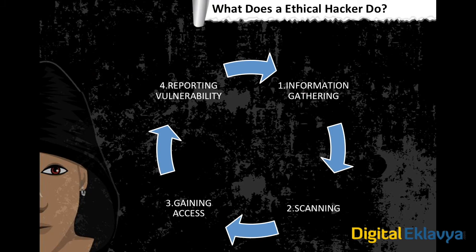What does an ethical hacker do? First, we gather information about the target — suppose the target is yourcollege.com. We gather information from various sources on the internet using tools, write everything down in one place, and use that information to identify what is needed further for exploitation and gaining access.